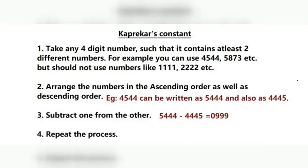4544 can be written as 5444 in descending order and 4445 in ascending order. Subtracting one from the other: 5444 minus 4445 gives you 0999. We put the preceding zero before the number because in this procedure of Kaprekar's Constant, we are working only with four-digit numbers. We then repeat the process with 0999.